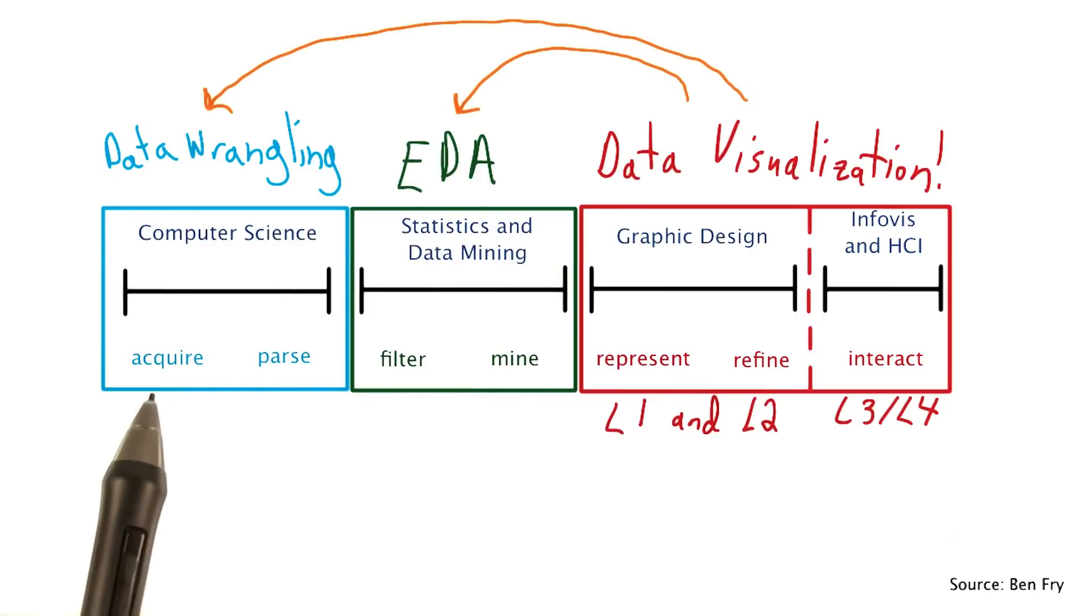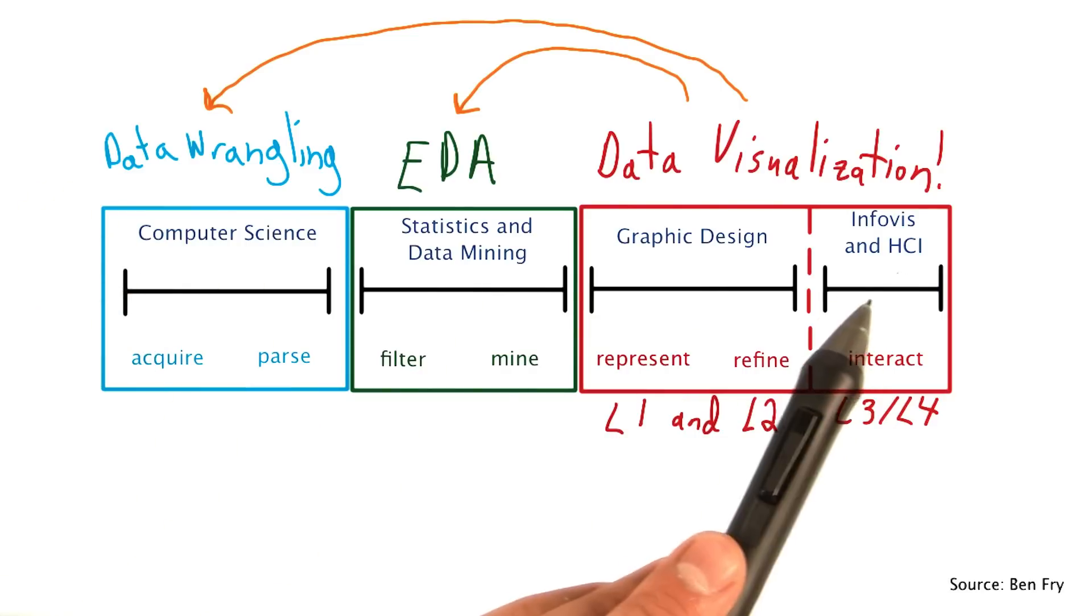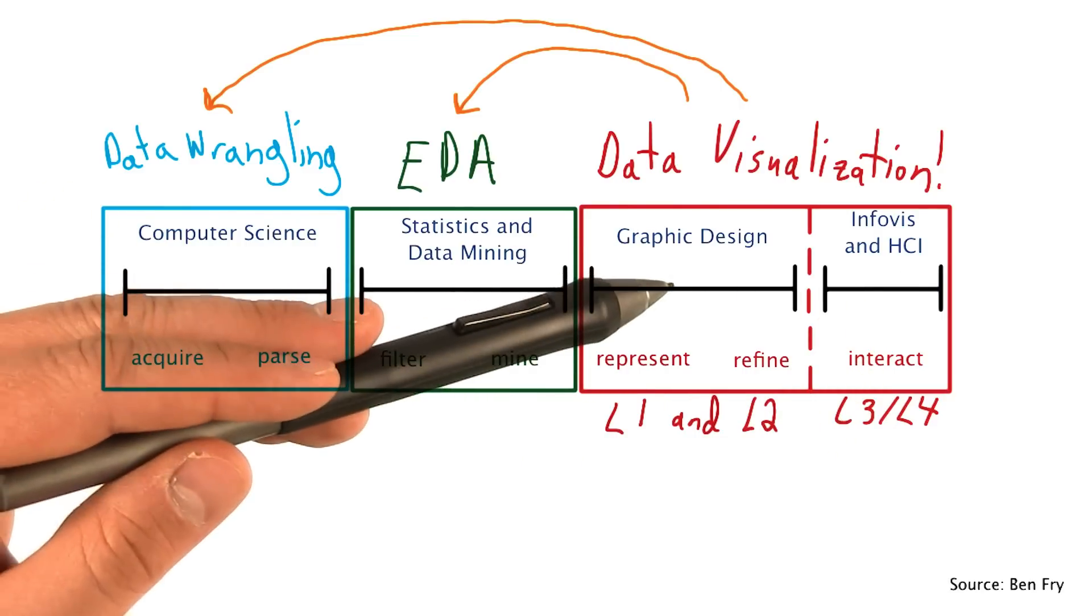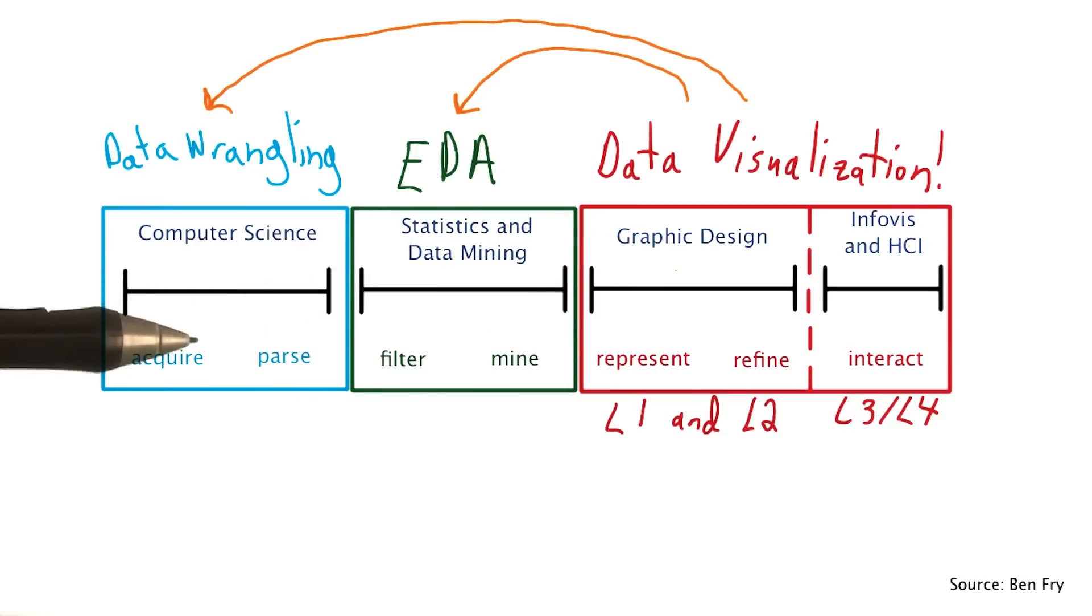And while you may read this graphic from left to right, each stage is often iterative. And you'll find yourself traversing this process in a somewhat non-linear fashion. One step may better inform what you have done in a previous step.